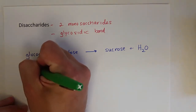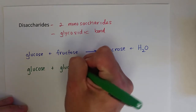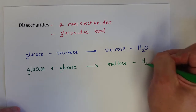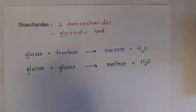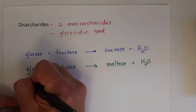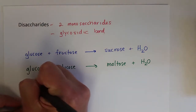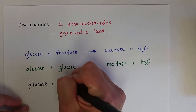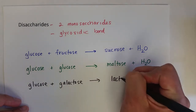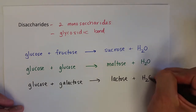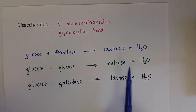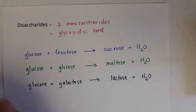If two glucose molecules form a glycosidic bond, that makes the disaccharide maltose, and again there's a loss of water. Lactose is formed from glucose plus galactose and is found in a lot of dairy products. When monosaccharides form disaccharides — or when any carbohydrates are linked together to make a disaccharide or polysaccharide — that is called a condensation reaction.